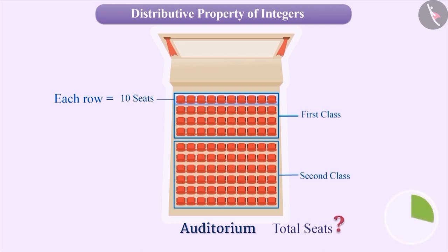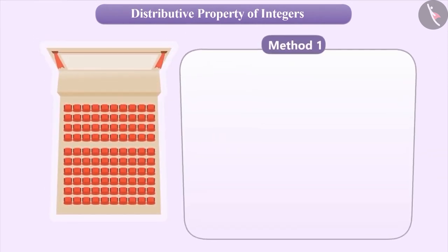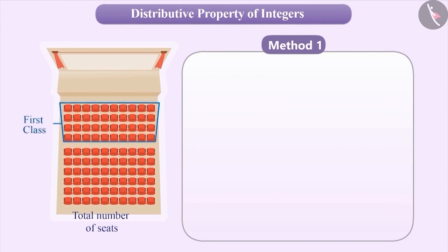Think about it. Let me explain. There are two ways to find this out. Method 1: One way to find the total number of seats in the auditorium is to add the total number of seats in the first and the second class.